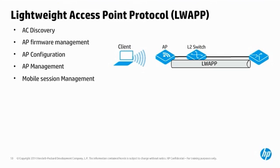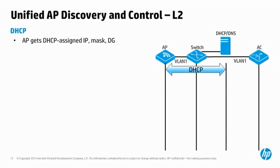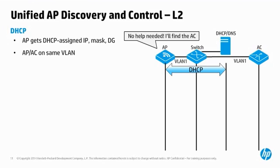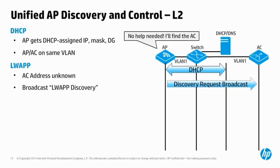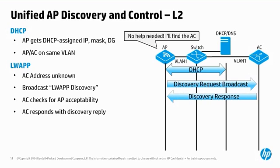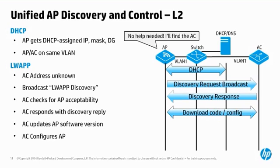Let's see how this plays out for a Layer 2 AP to AC connection. Once the AP boots up, it uses DHCP to acquire an IP address, subnet mask, and default gateway. It does not know the IP address of the AC, but that's okay. The AP and AC are in the same VLAN or broadcast domain. When the AP sends an LWAP discovery request message to the broadcast address, the AC receives it and checks to see if the AP has controller access. Assuming the AP has access, the AC sends a discovery response back to the AP. The AP downloads the correct software version and configuration from the AC, and can now operate normally.